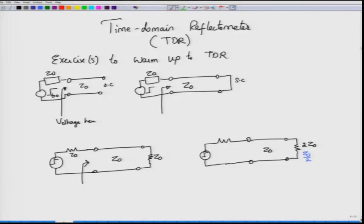As a warm-up exercise for TDR, let us look at a few cases I have drawn here. In case A, I consider a step voltage launched at t = 0 on a transmission line. The characteristic impedance Z0 is real, and the source also has impedance Z0. We design the instrument such that the source impedance equals the characteristic impedance — a pulse generator with impedance Z0 connected to a transmission line of Z0.